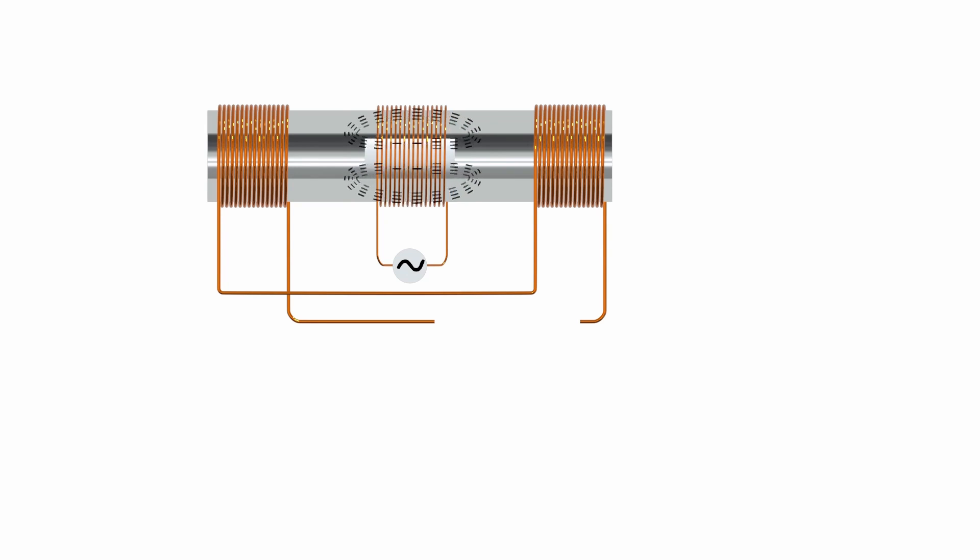The two secondary coils are located on either side of the primary coil, at an equal distance. These secondary coils have an equal number of turns and are connected in series opposition, meaning their induced EMFs oppose each other.